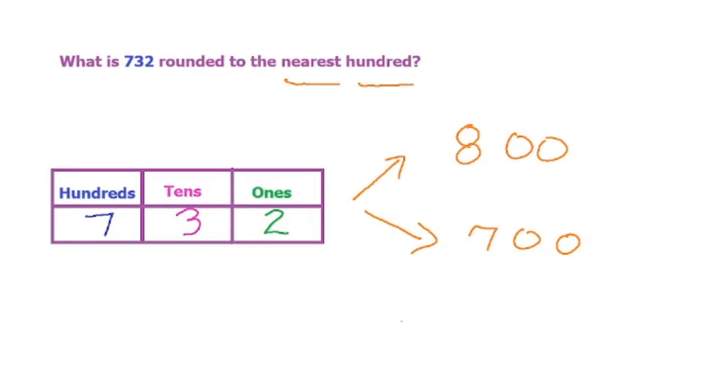The way you do that is you start at the hundreds, which is the thing that you have to round to, and you look to the right of the number. This three is less than five, so that means you would round 732 to 700. This is the answer.